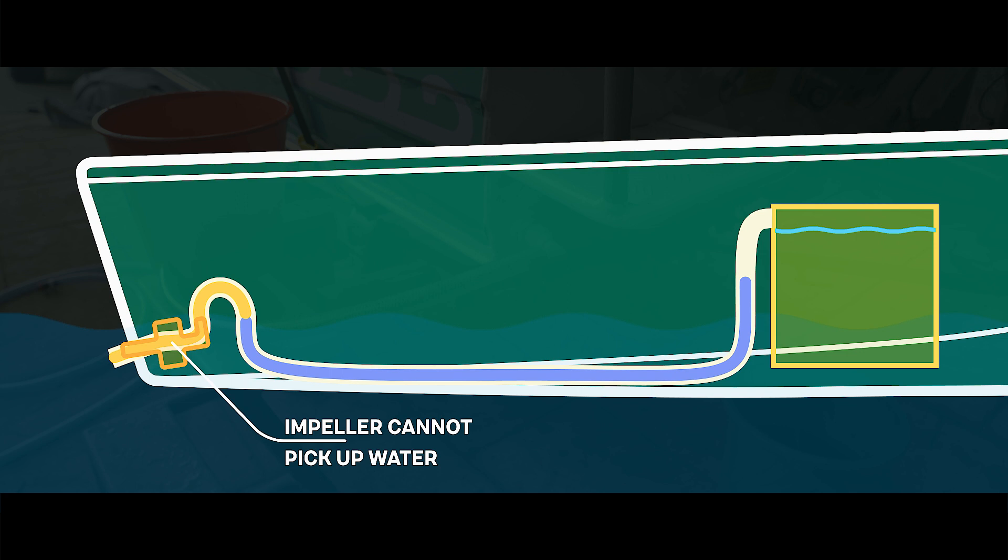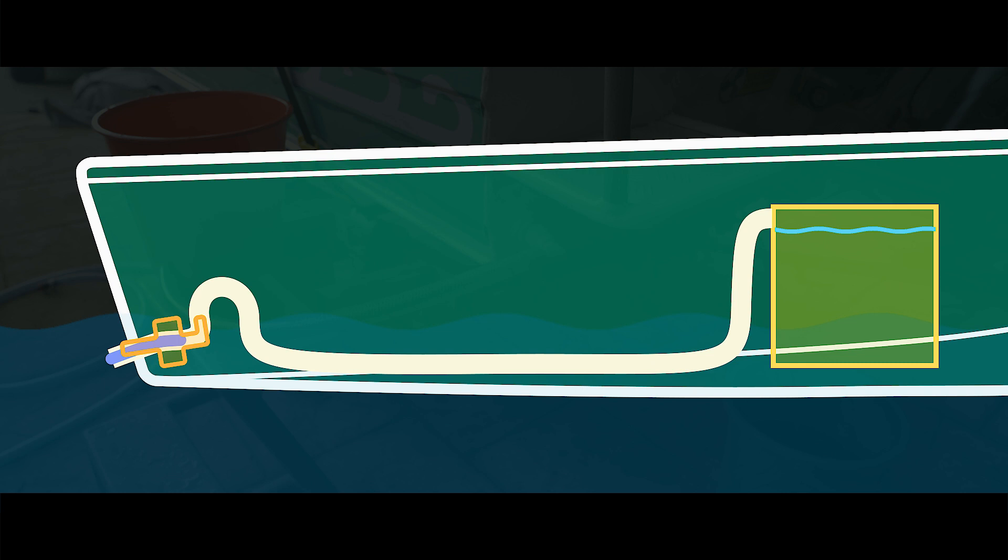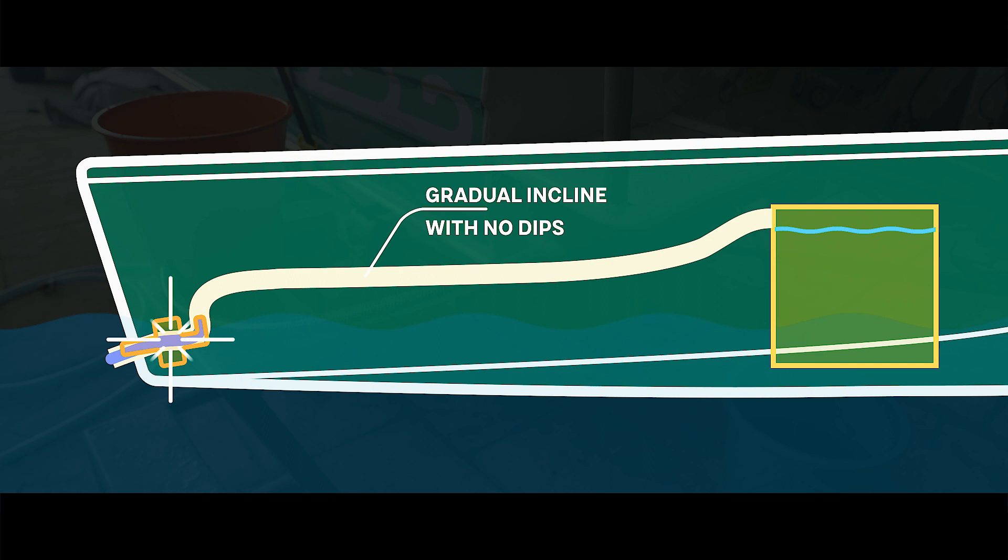So, in essence, the best way to avoid an airlock is to make sure the hose is always travelling upwards so any air can pass through the system uninterrupted.